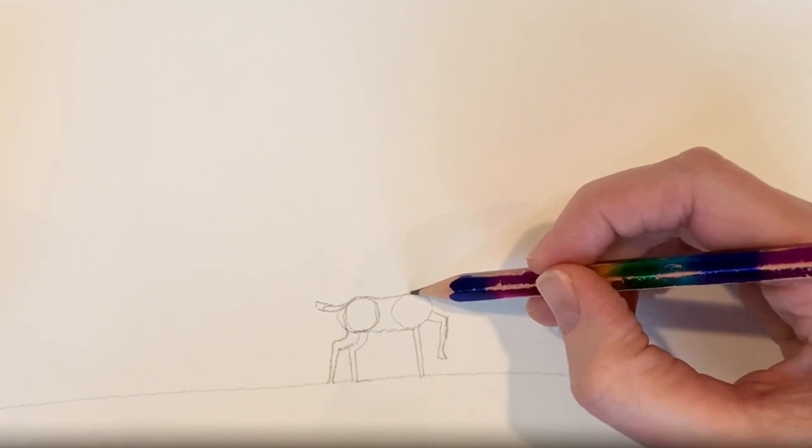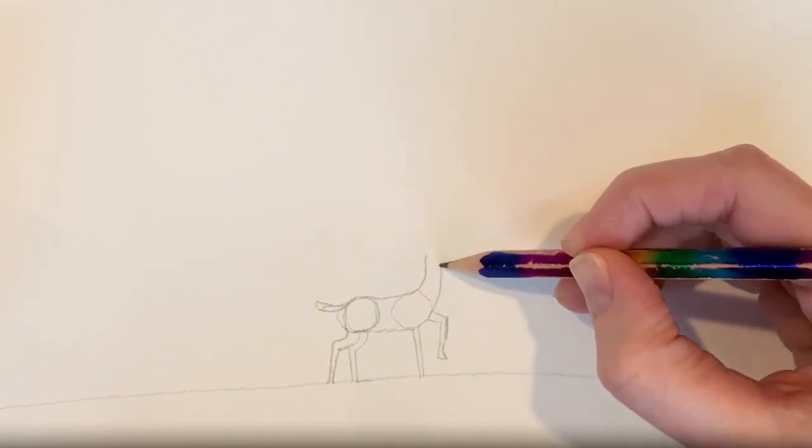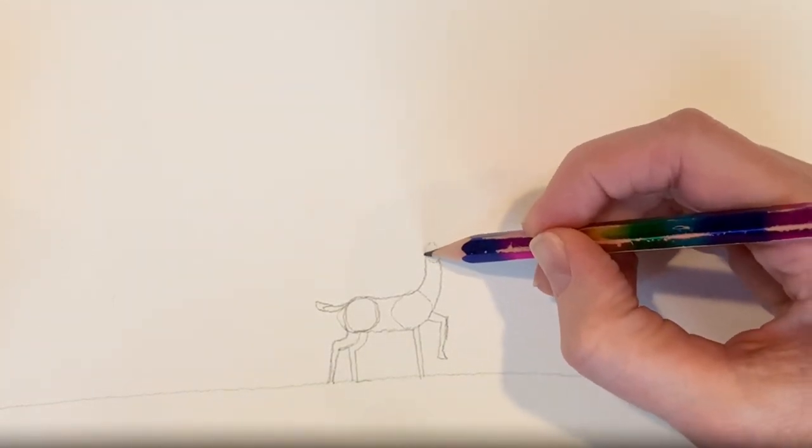Now for the deer's neck, it'll come curving up. Deer have really long necks. I'll add a little circle at the top for its head.